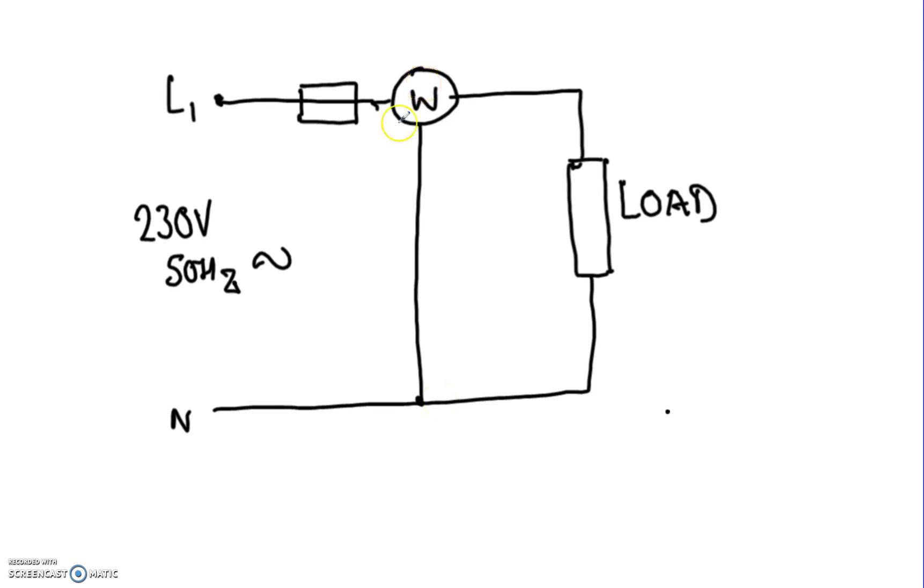Now, again, for higher current applications, you may use CTs. Obviously, this is for a typical domestic supply where you're getting up to no longer than 50, 60 amps. So the workings within the wattmeter would be quite substantial for that kind of ampage.